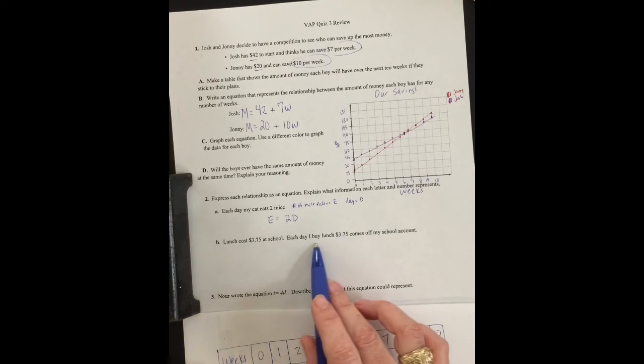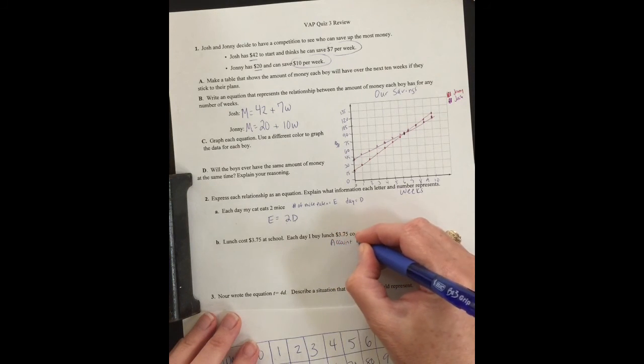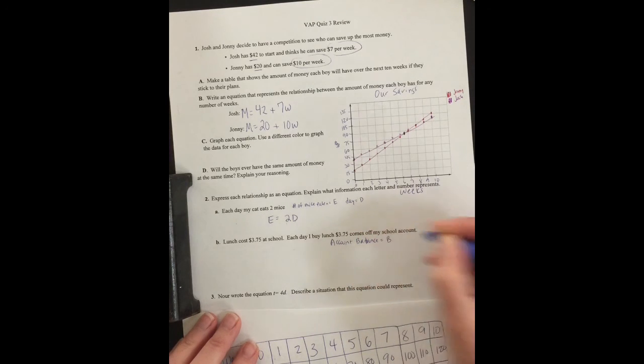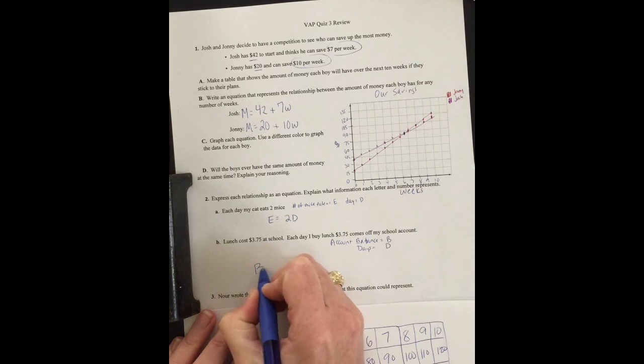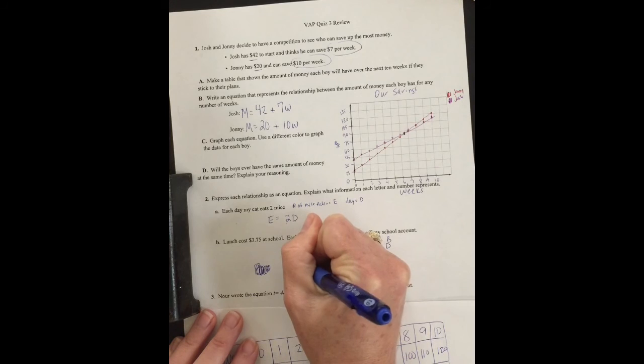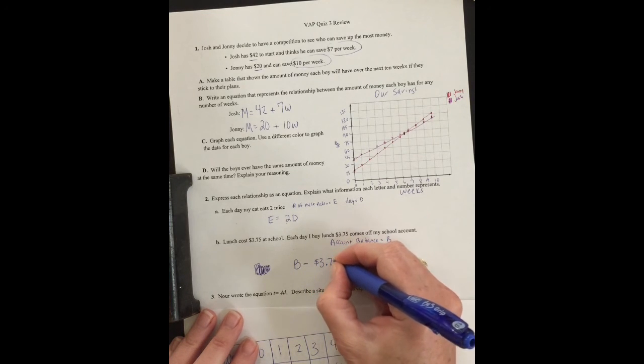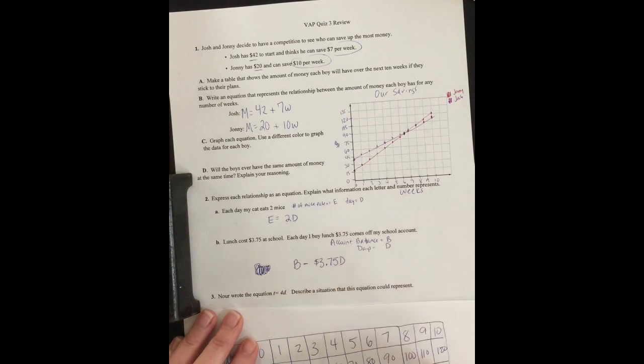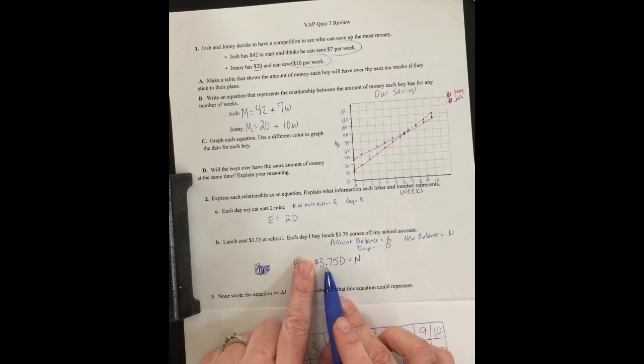Next one says, lunch costs $3.75 at school. Each day I buy lunch, $3.75 comes off of my school account. Alright, so, my account balance is B. And then we would need to say the number of days is D. So, my new balance equals whatever my balance is, minus $3.75 times however many days I buy it: N = B - 3.75D. So, whatever's on my card, minus $3.75 times however many days I buy it, multiply these, would give you N, your new balance.